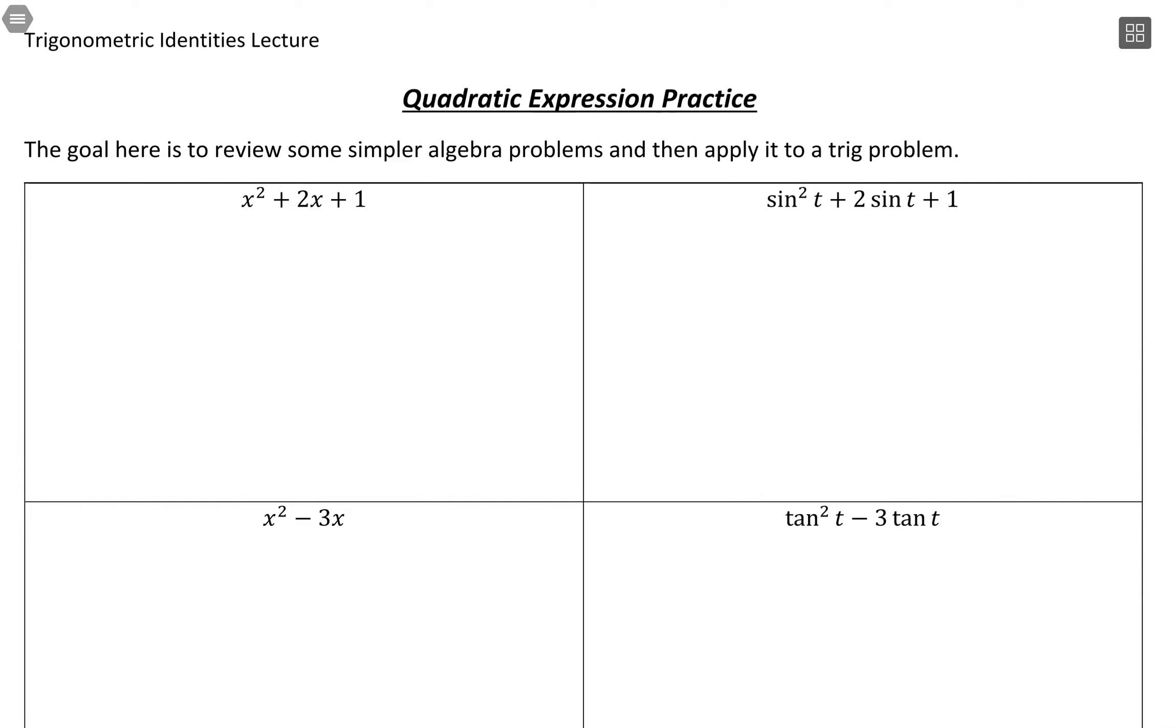When we deal with these trig functions and we have a square in just one of them, you can relate that in terms of x. Having something squared plus 2 times something plus 1 would be the same thing as having sine squared plus 2 times sine plus 1. It's the same setup and we can work with it in the same way that we did in our algebra classes previously.